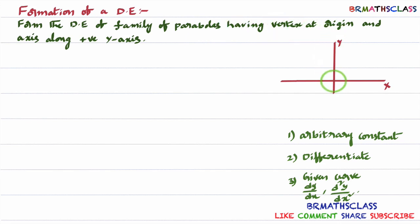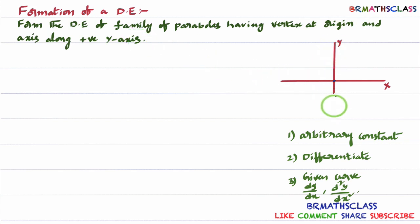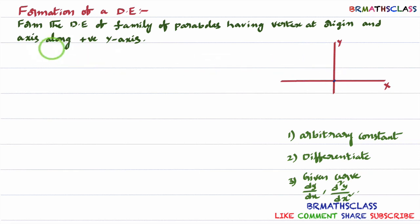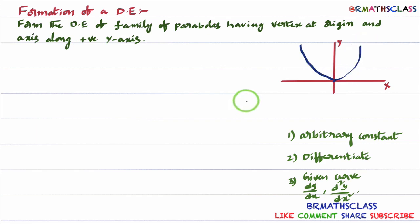This is the origin. Now, family of parabolas having vertex at origin and axis along positive y-axis. Where is the positive y-axis? This is positive y-axis and this is negative y-axis. They are saying axis along positive y-axis. If the axis is along positive y-axis, the parabola will open in the upward direction. This is the parabola open upward direction.